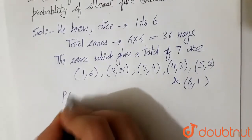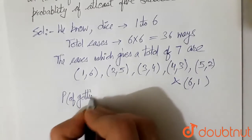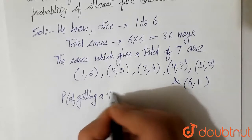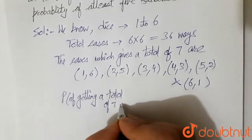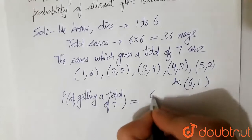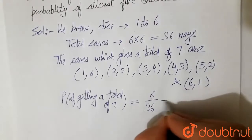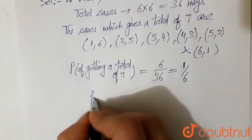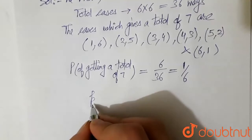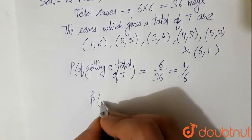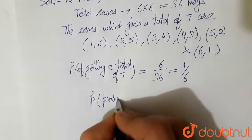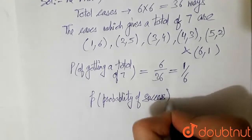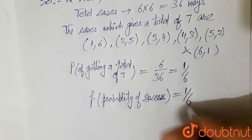So probability of getting a total of 7 would be equal to 6 divided by total cases, that is 36. So it becomes 1 by 6. So suppose this is denoted by small p, that is probability of success. Probability of success, so this is 1 by 6.